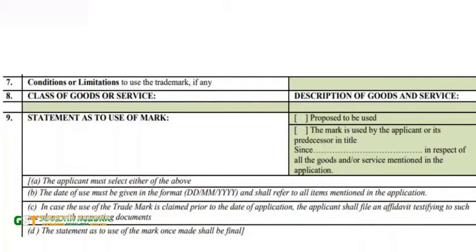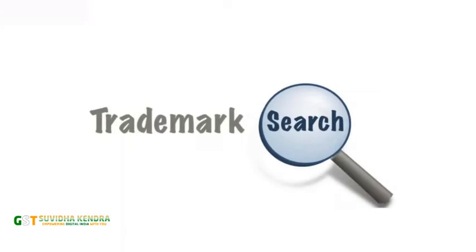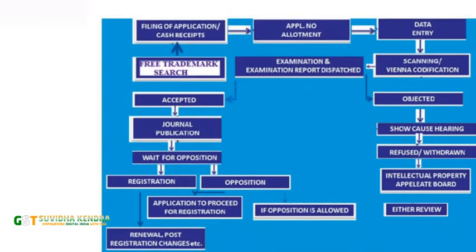The applicant is required to mention their details, but before applying, the person should check whether such mark is already registered or not. A trademark search should be done prior to application. In filing form TMA, the person is required to mention the class and describe the goods or services. A soft copy of the trademark is also uploaded while applying. After successful submission and payment of fees, an application number is generated.